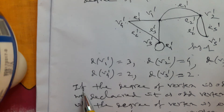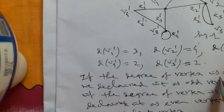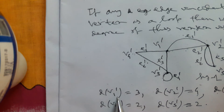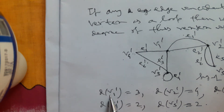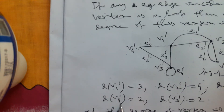Now we consider the terms odd vertex and even vertex. If the degree of a vertex is odd, then it is declared as an odd vertex, and if it is even, it is declared as an even vertex. In the earlier representation, V_1 is an odd vertex, while V_2, V_3, V_4, and V_5 are all even vertices.